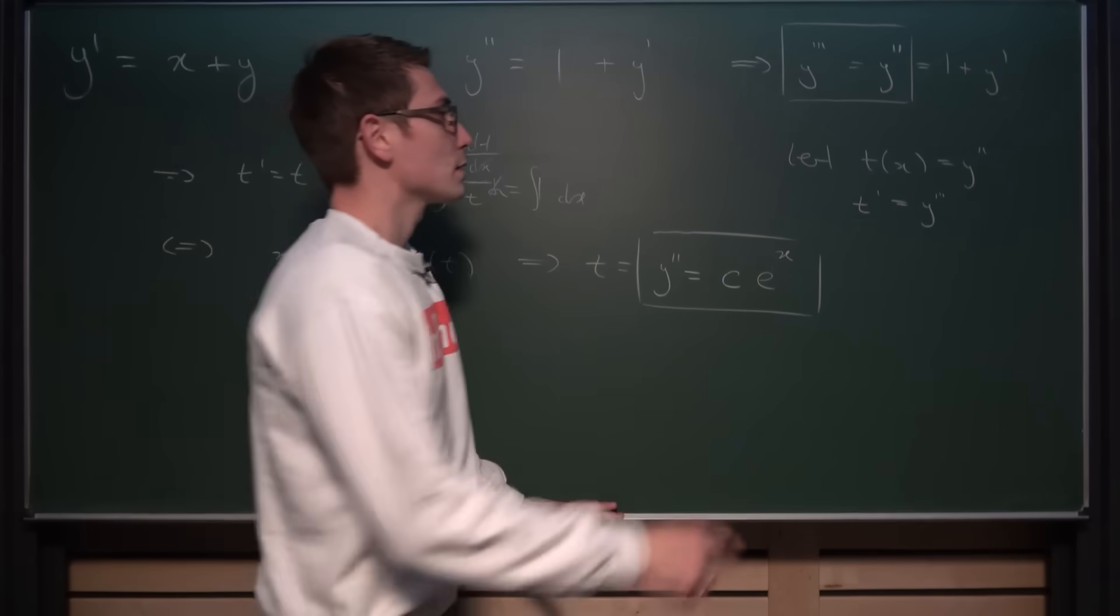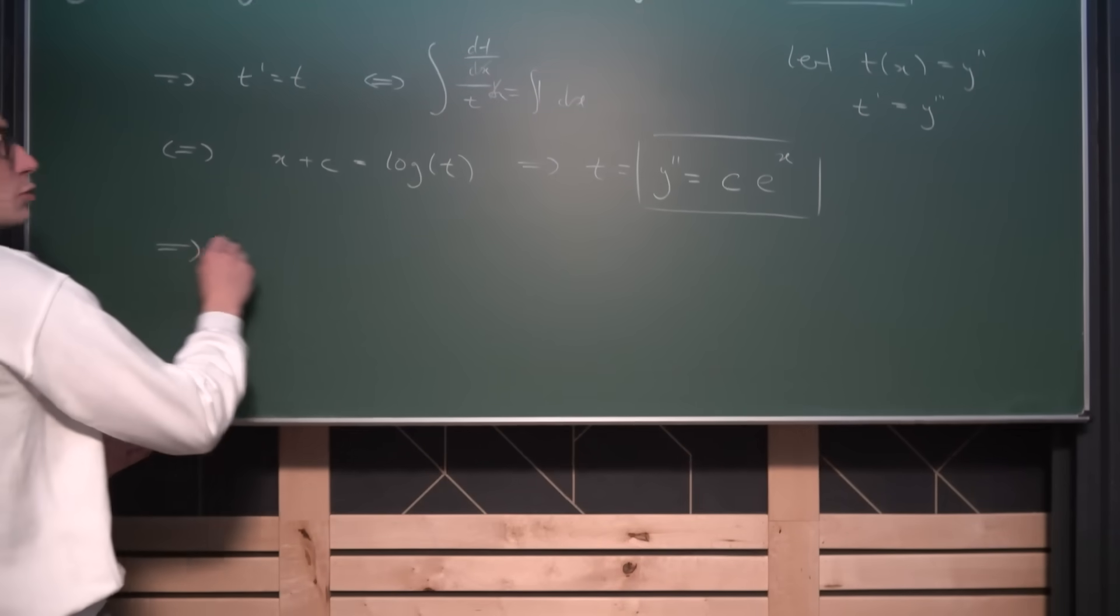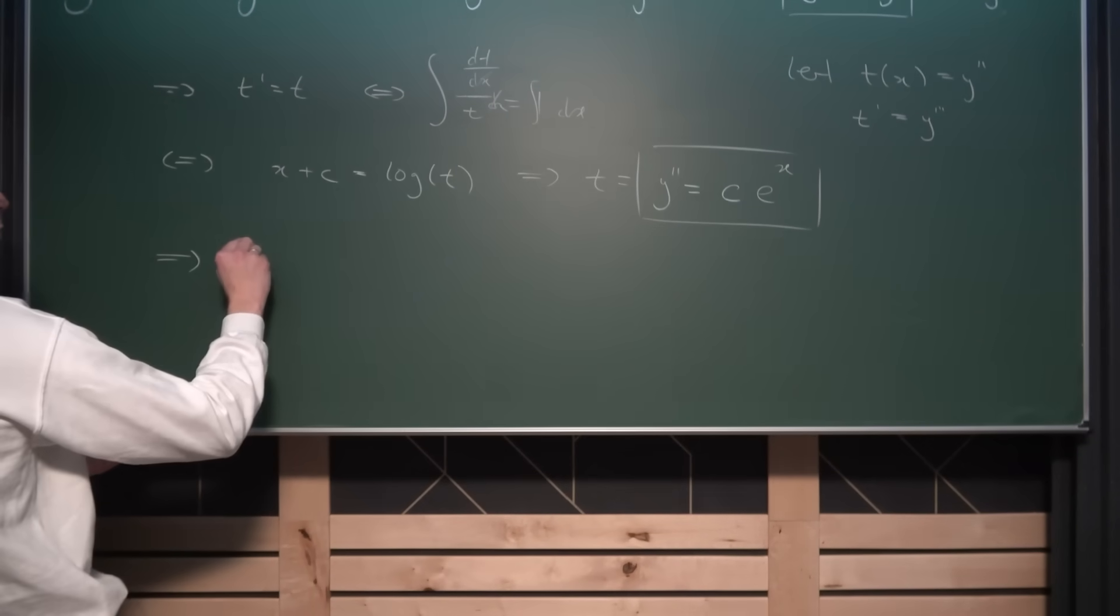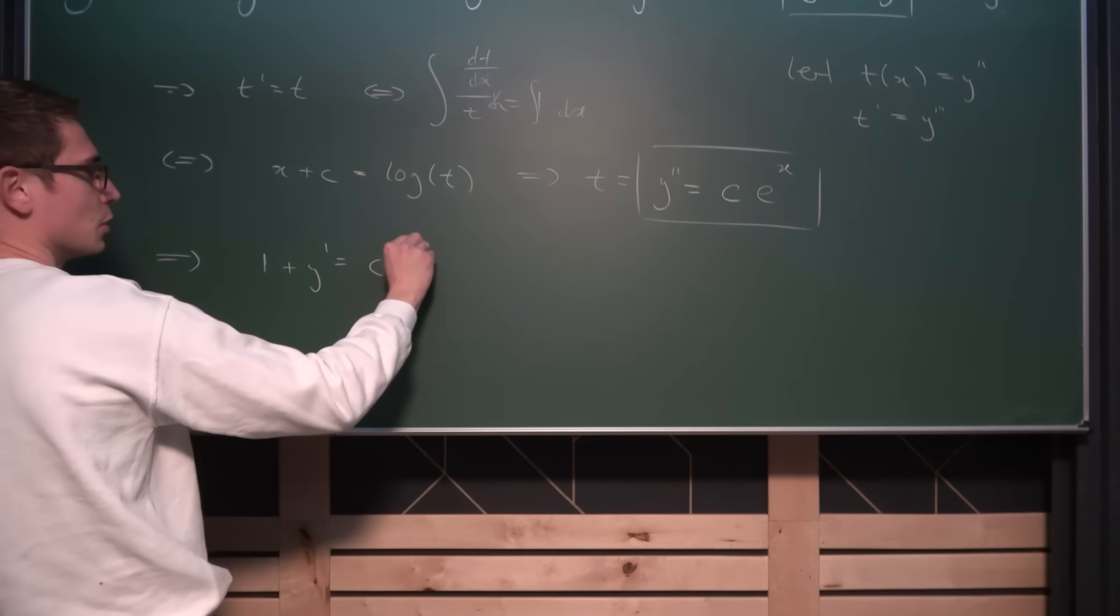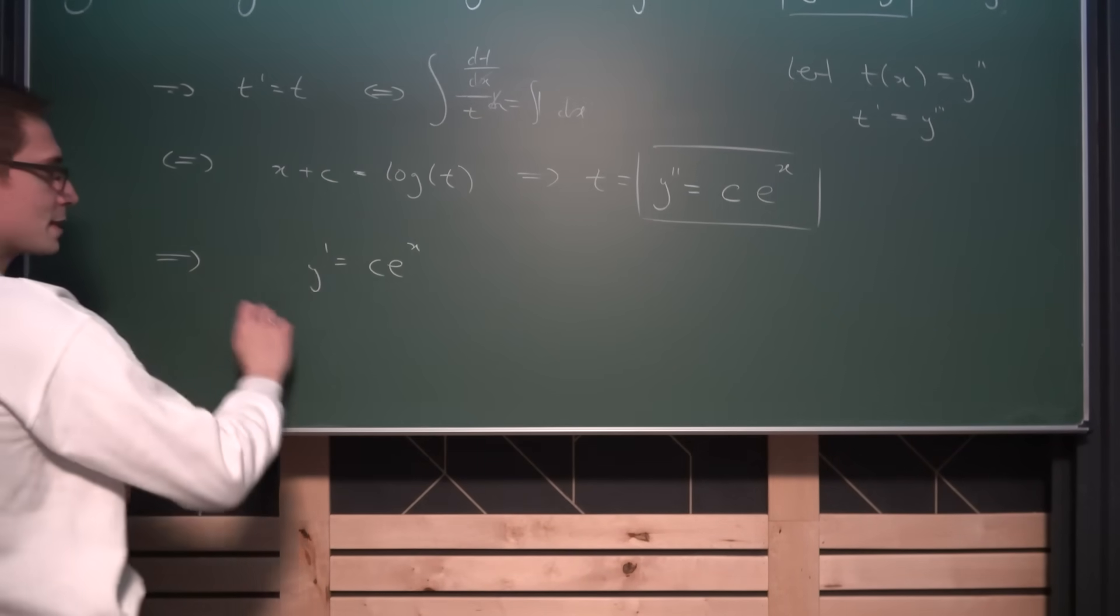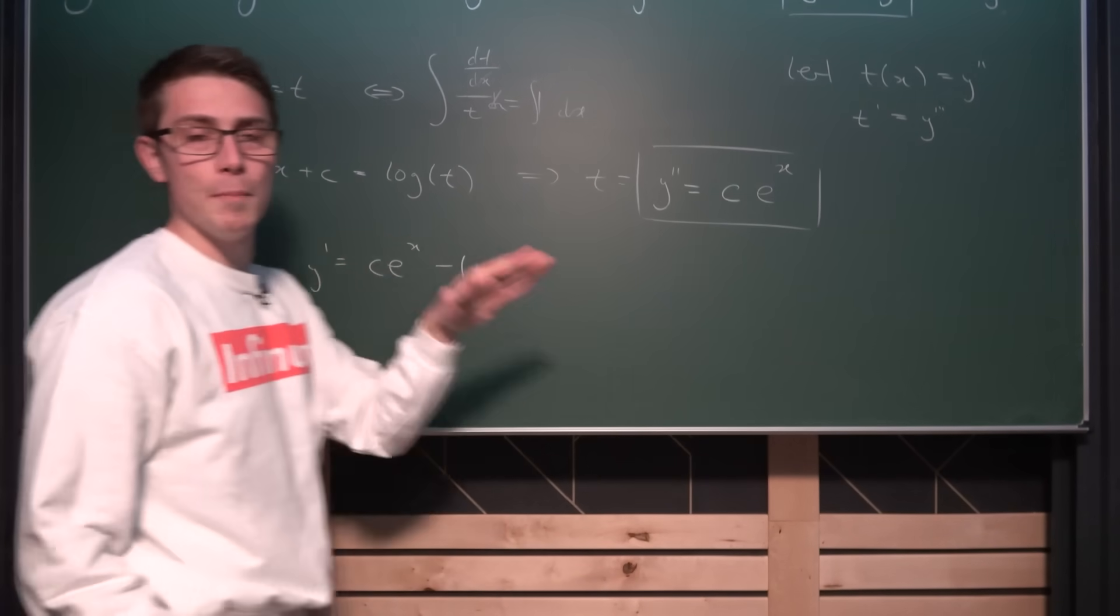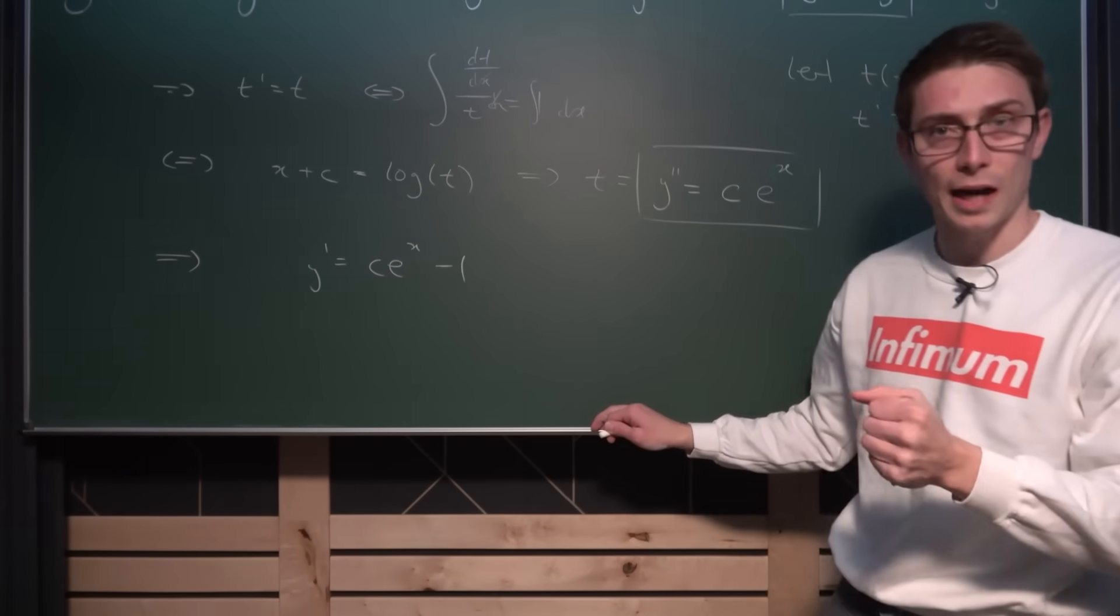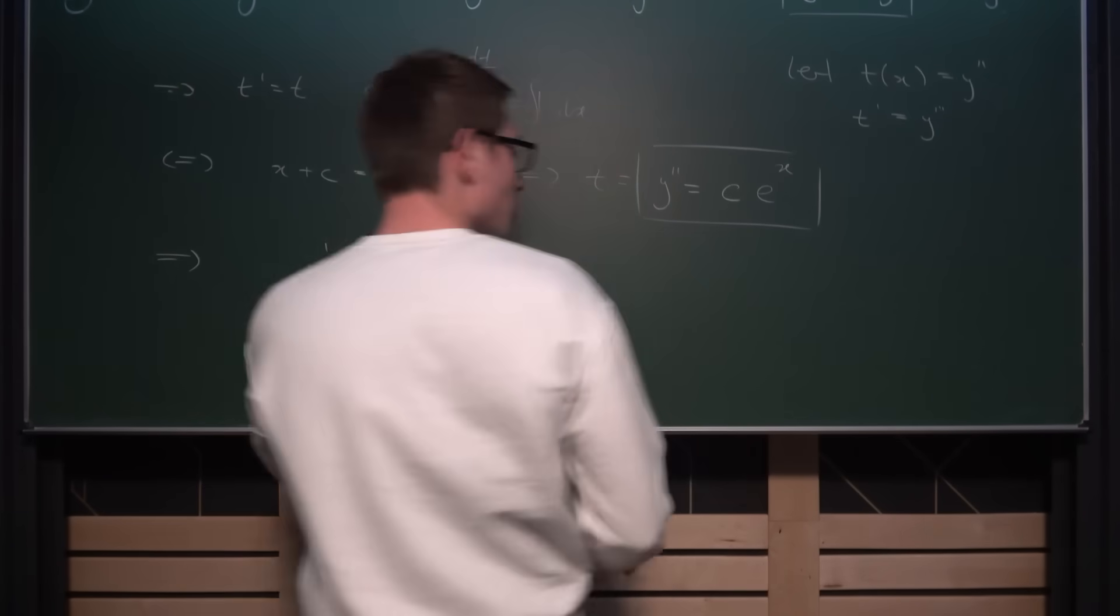Now we can plug this into here and then we can continue with our process. If we plug this into the relationship that Y'' is the same as 1 plus Y', then we are going to get that 1 plus Y' is equal to C times e to the X. Or if we bring the 1 to the other side by subtracting it, we are going to get that Y' is of the form C times e to the X minus 1. And what we can do now is we can integrate both sides with respect to X yet again to get back to Y of X. And then we are almost done.